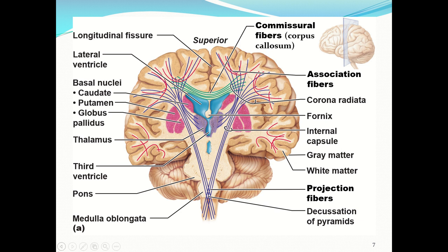In the illustration, projection fibers are pictured in purple — sensory input comes towards the brain (afferent, approaching) and motor output goes away from the brain (efferent, exiting). The corpus callosum is pictured in green, connecting the right and left hemispheres and allowing them to communicate with one another. Association fibers are pictured in red, connecting different parts of the same hemisphere.